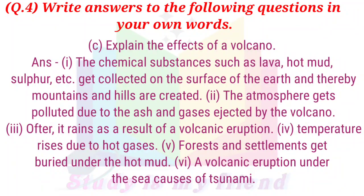C) Explain the effects of a volcano. Answer: Chemical substances such as lava, hot mud, sulfur, etc. get collected on the surface of the earth, thereby creating mountains and hills. The atmosphere gets polluted due to the ash and gases ejected by the volcano. Often it rains as a result of volcanic eruption. Temperature rises due to hot gases. Forests and settlements get buried under hot mud. A volcanic eruption under the sea causes a tsunami.